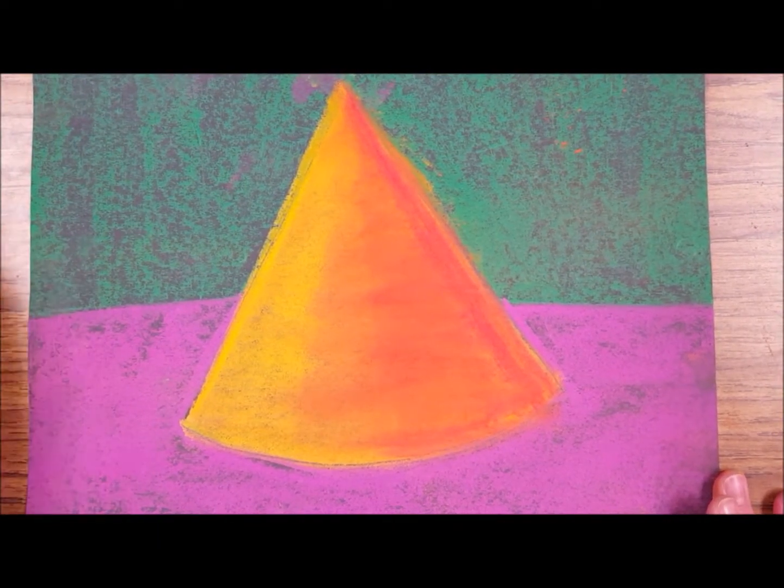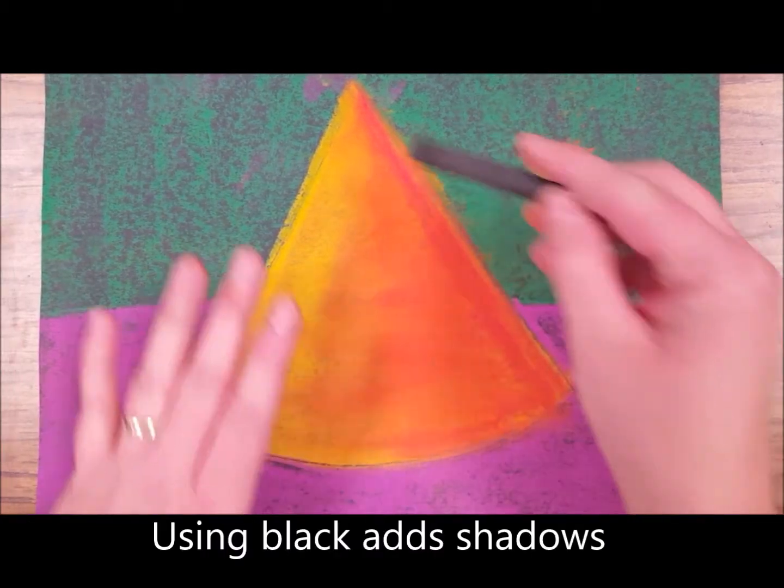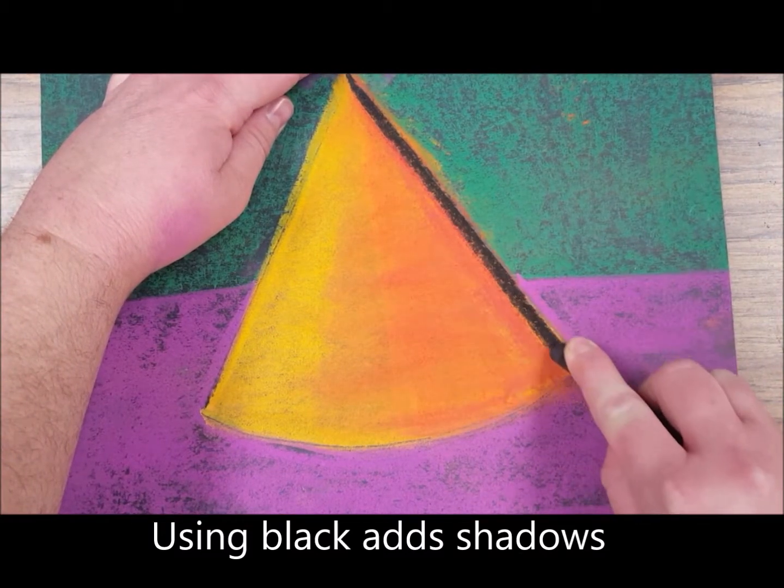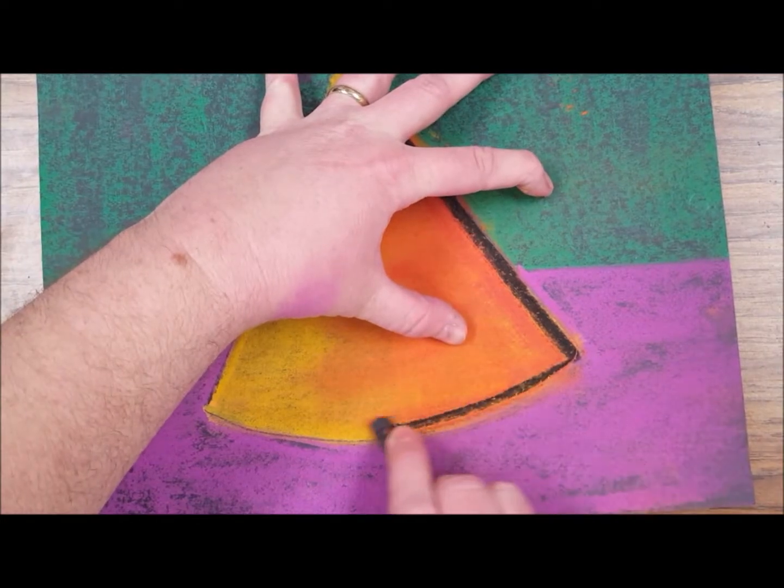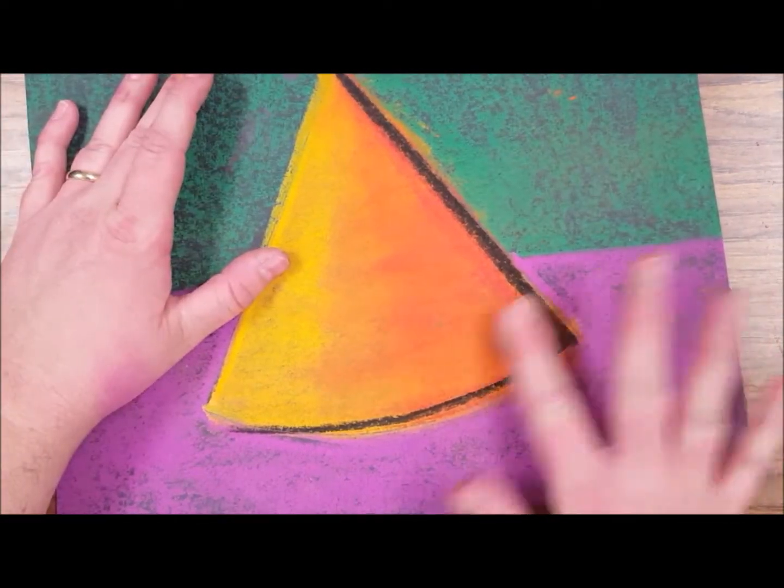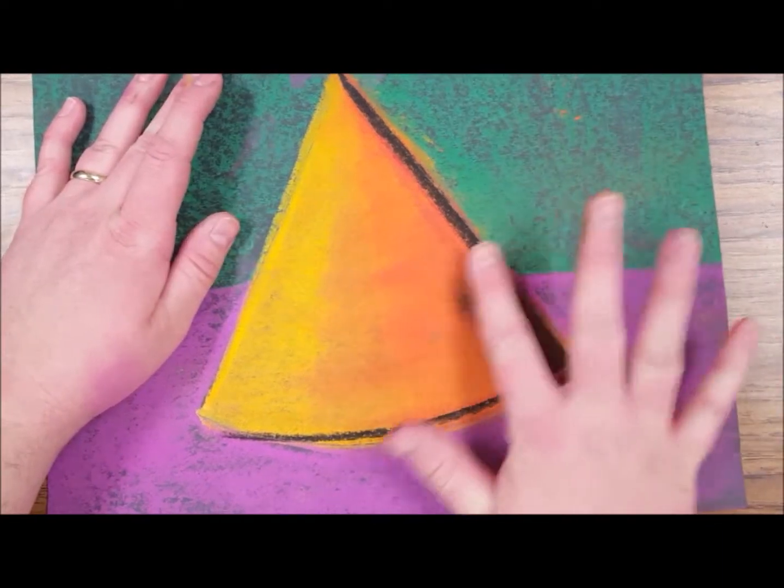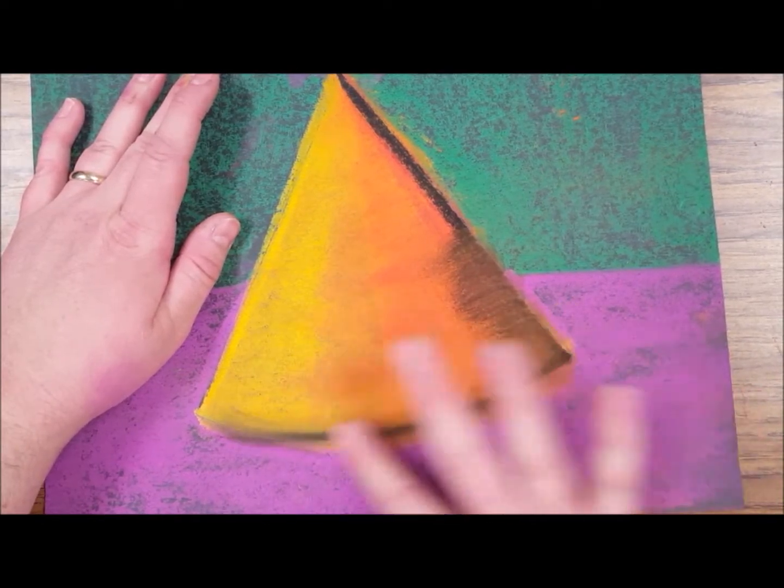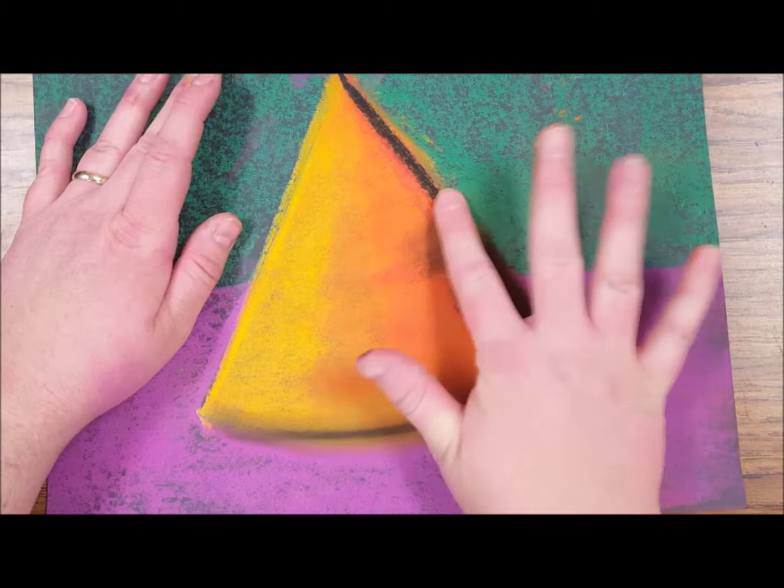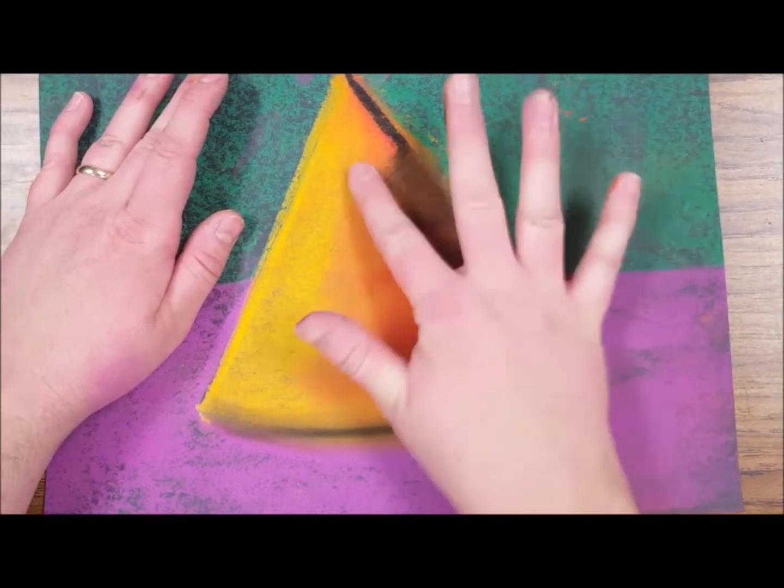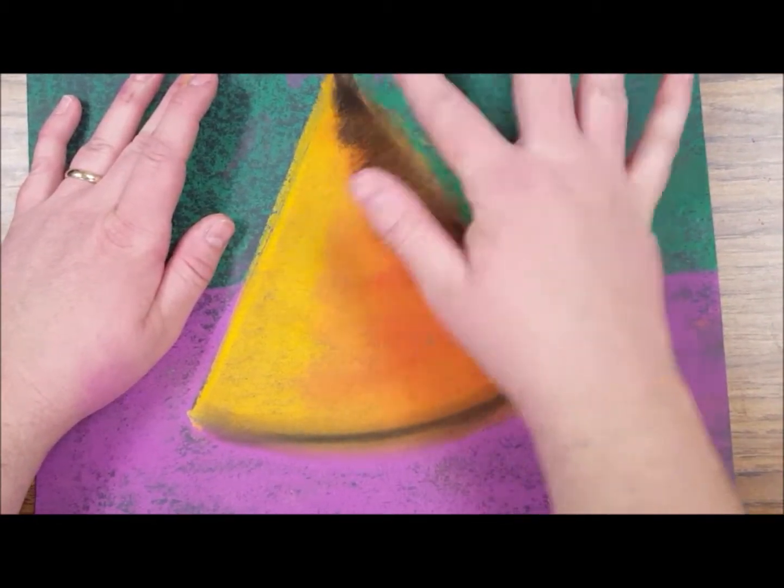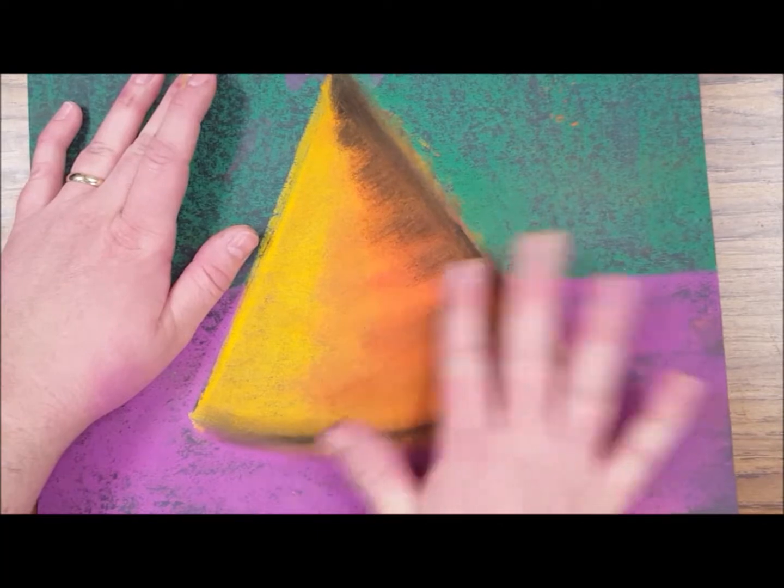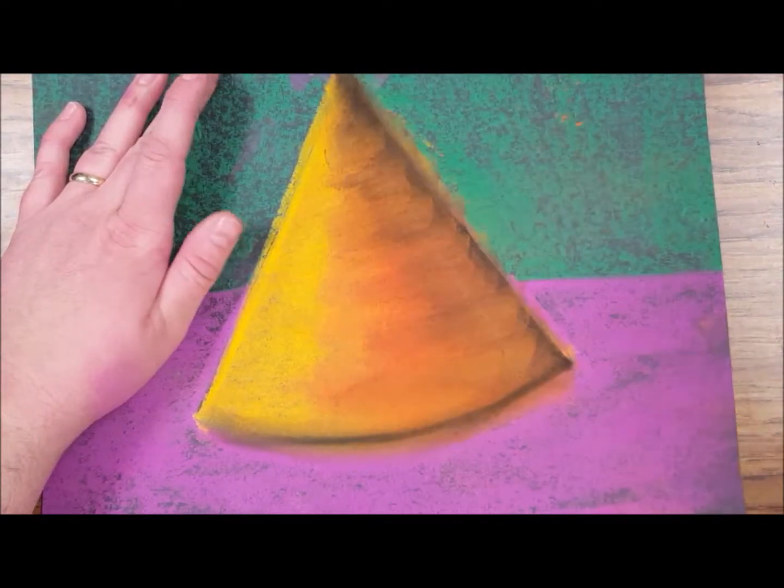Now to make it look even more 3D, what I'm going to do is take black. I'm going to go along my darker edge and a little bit along the bottom. Just going to blend that in.